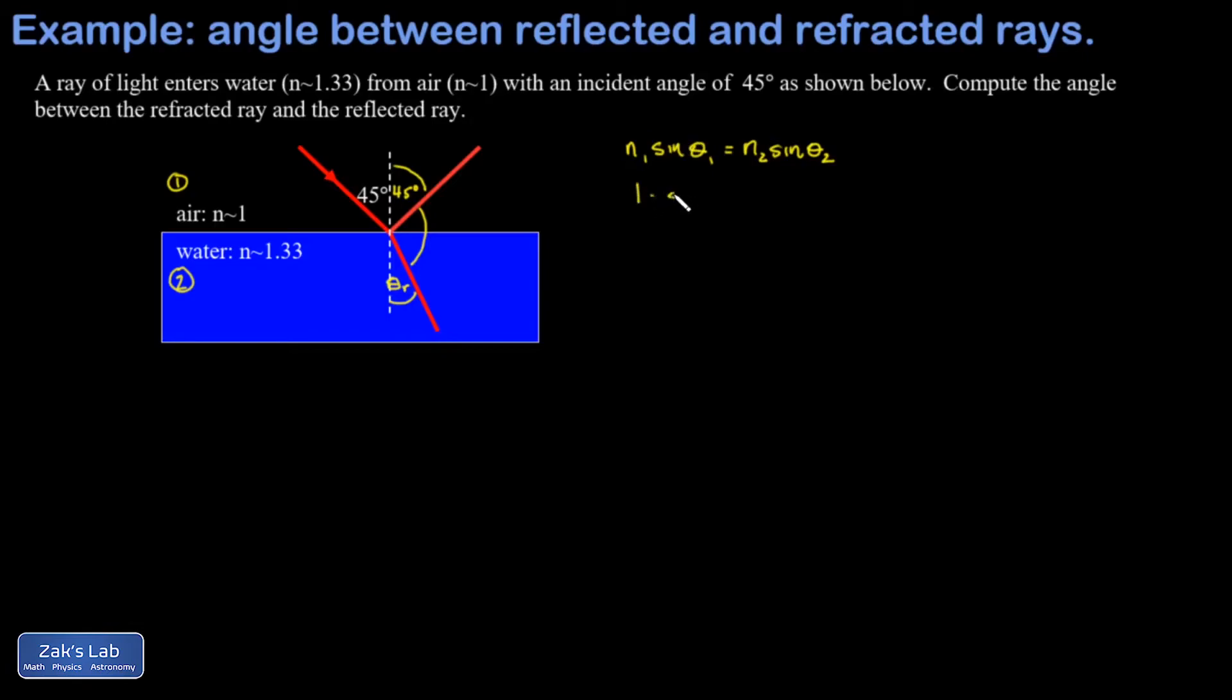I'm going to plug that in and then sine of theta one, which is the incident angle of 45 degrees. The index of refraction of water is 1.33 and then sine of theta 2, which I'll call theta r, the refracted angle. I divide by 1.33 on both sides and then invert the sine function to solve for theta r.